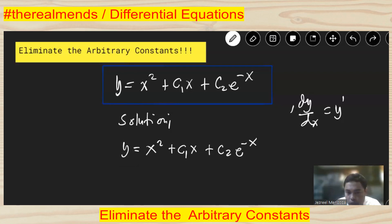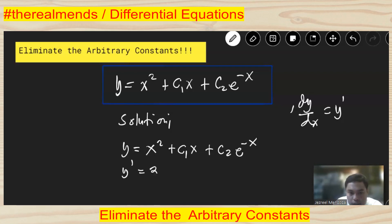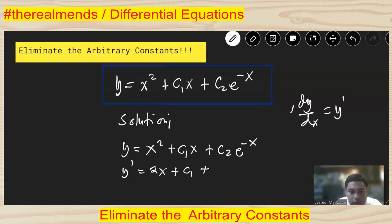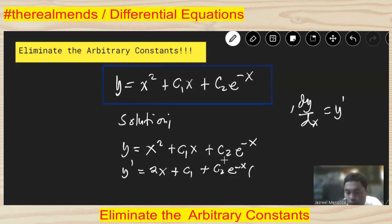The first derivative y prime with respect to x: the derivative of x squared gives 2x, plus c1 times the derivative of x which is just 1, giving c1, plus the derivative of c2·e to the negative x. Using the chain rule, that is c2·e to the u times du, where du of negative x is negative 1.